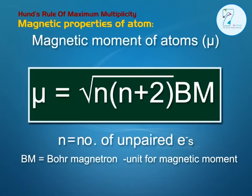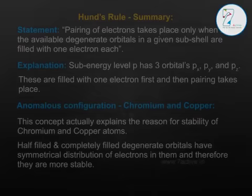Magnetic Moment of Atoms: Mu is equal to the square root of n(n+2) Bohr Magnetons, where n is equal to the number of unpaired electrons. The unit for magnetism is the Bohr Magneton (BM).